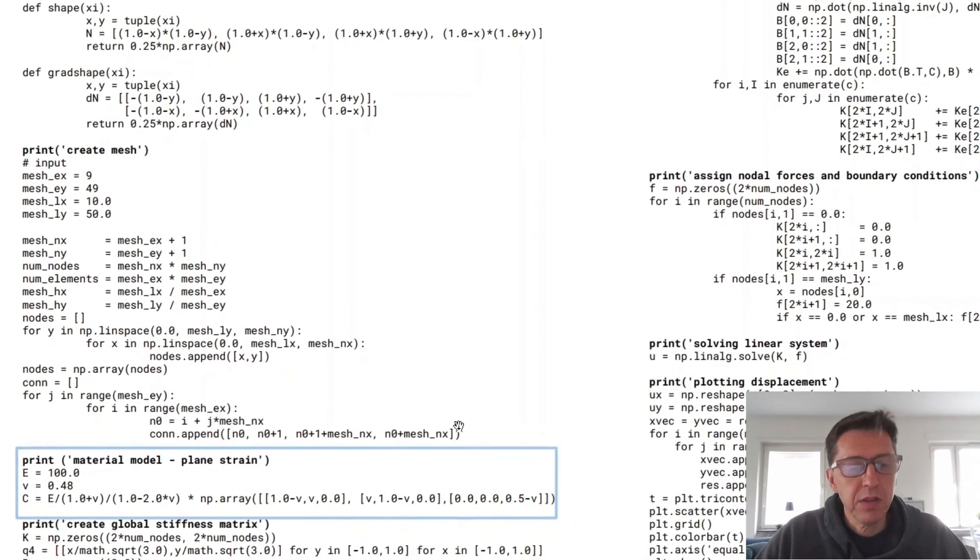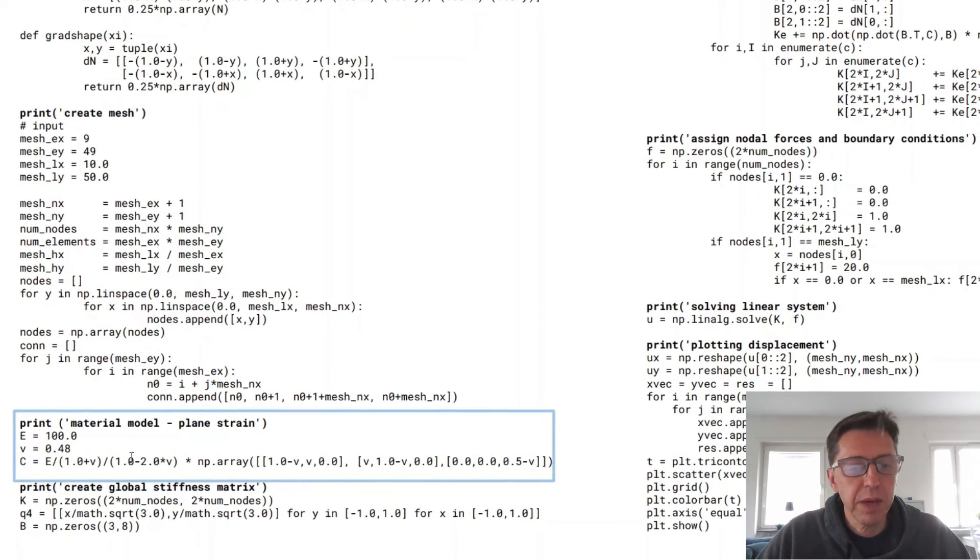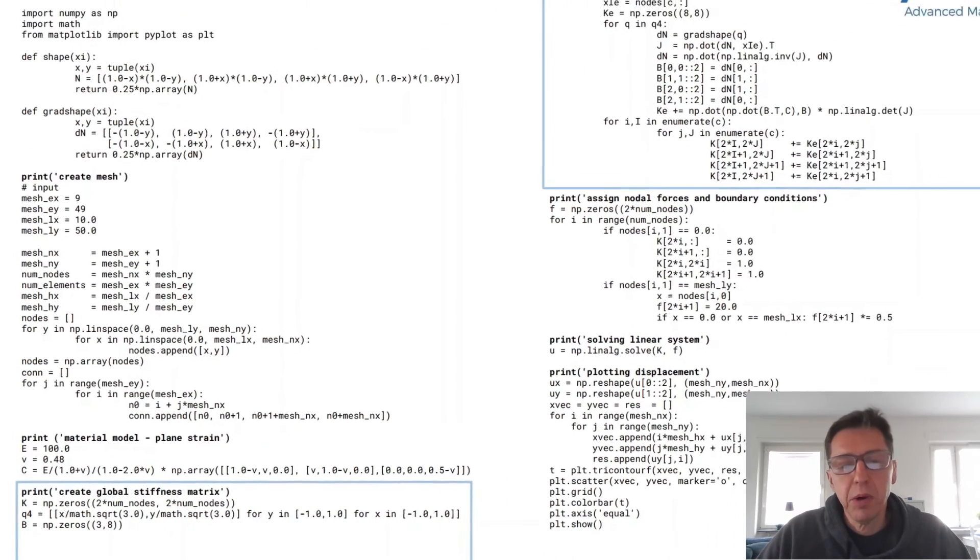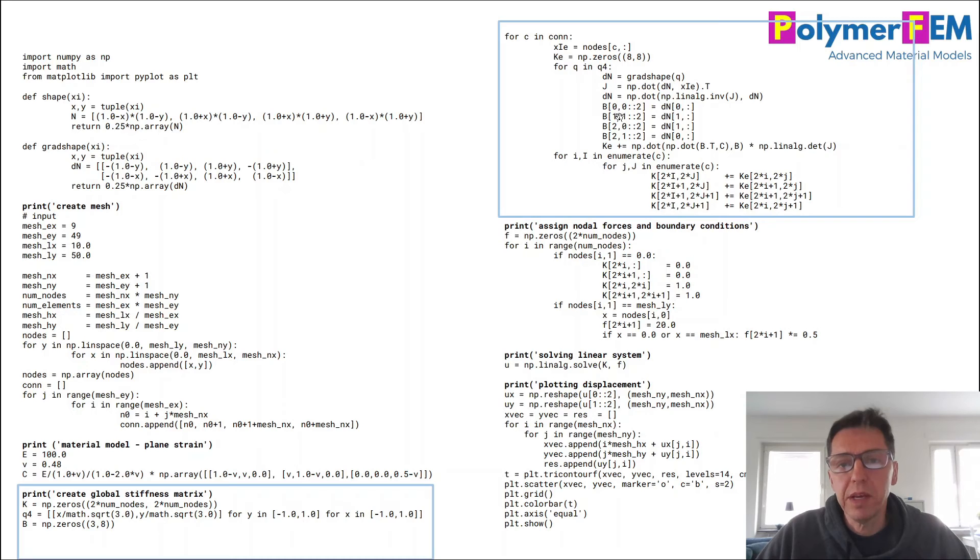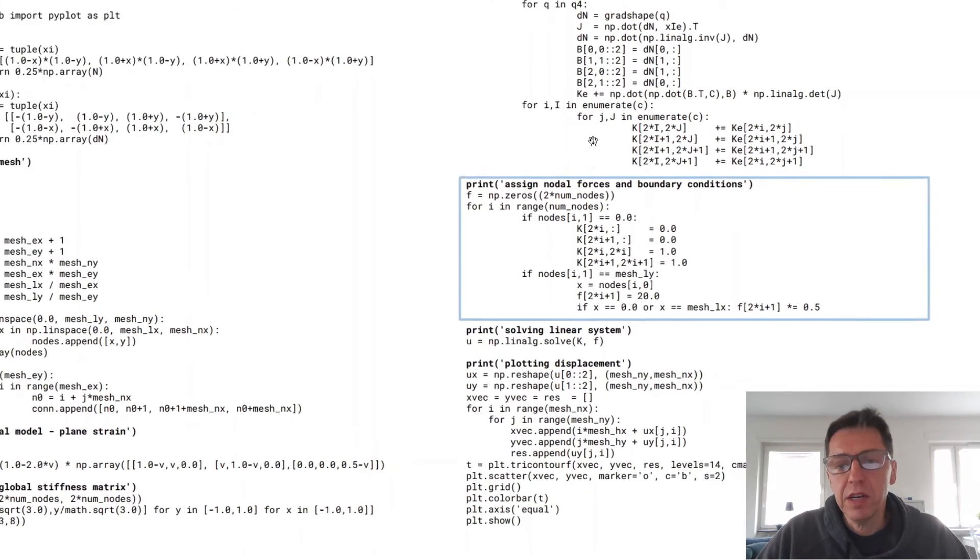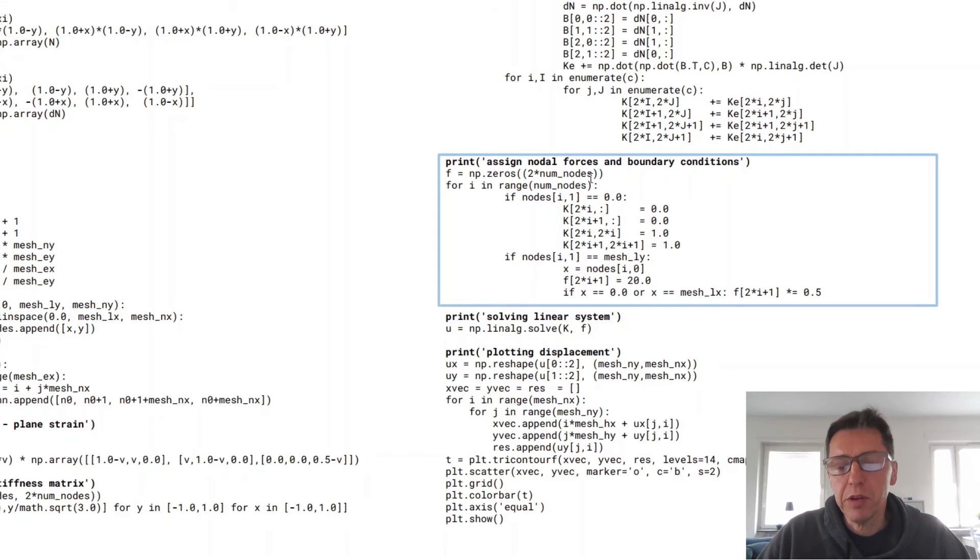The next part is the material definition. It's a plane strain linear elastic and we get this definition here. And then the next part here is a little bit more complicated set of for loops that sets up the global stiffness matrix of this particular problem. And once we have done that, we can assign nodal forces and boundary conditions to some of the nodes in order to have the boundary conditions that we want in this case. And that's done in these lines here.